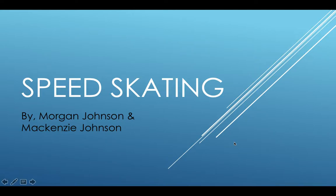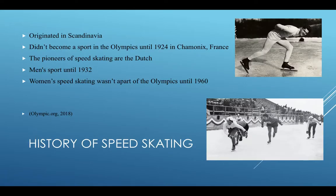For our Olympic project we chose the sport speed skating. The history of speed skating: it originated in Scandinavia and started out as people racing on frozen rivers and lakes. It became a sport in the Olympics in 1924 in Chamonix, France. The Dutch are the pioneers of speed skating, and they started speed skating to reach and deliver communication to different parts and villages in the area.